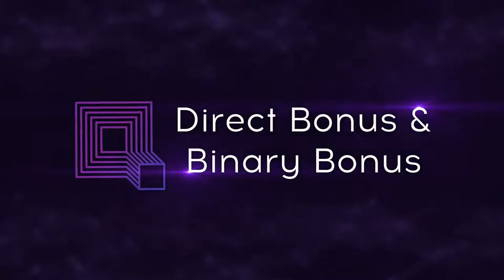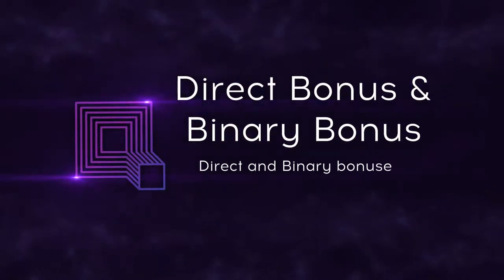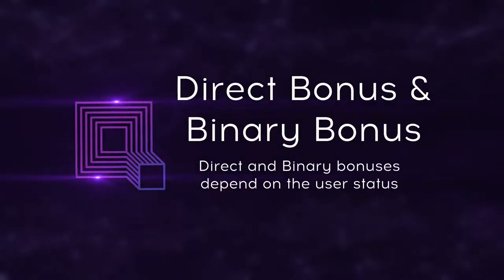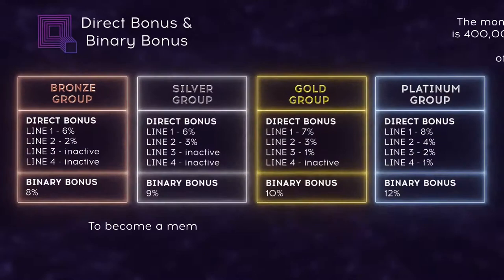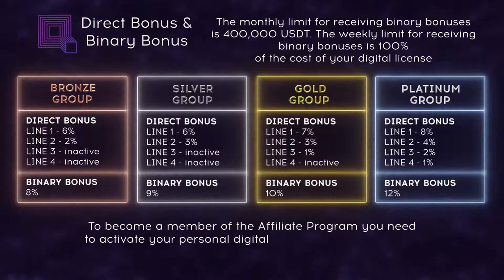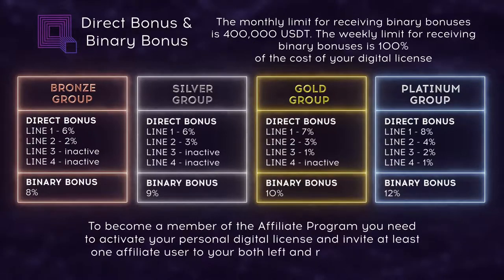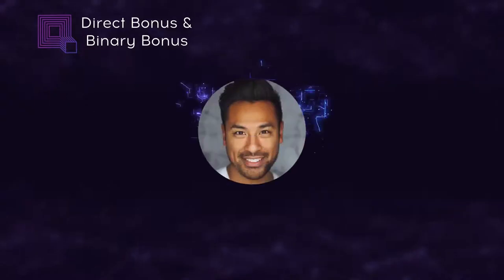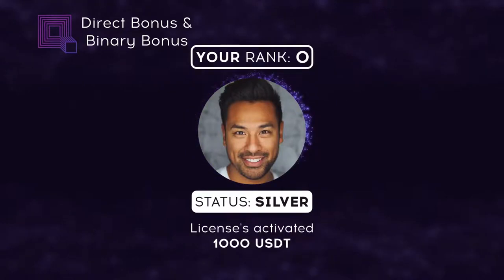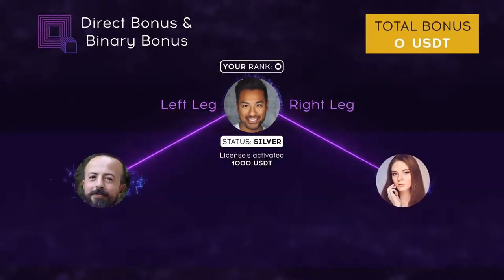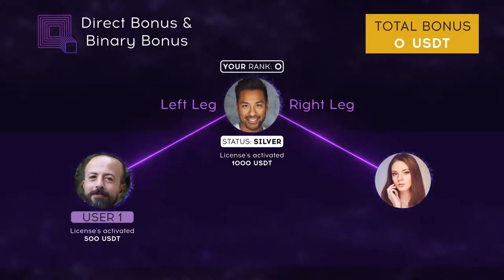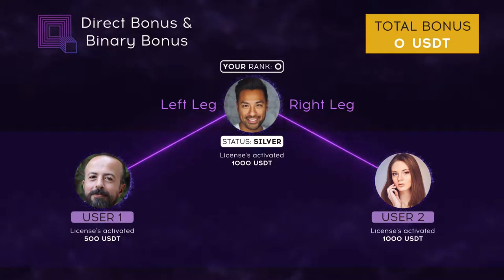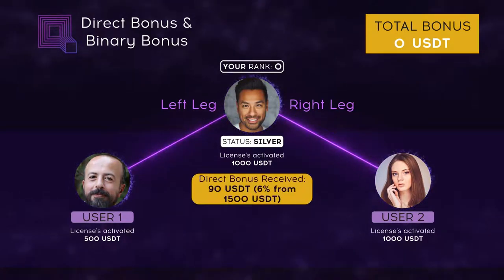Now let's take a look at Direct and Binary bonuses with examples on how to achieve these bonuses. Direct and Binary bonuses depend on the current user status — the higher the user status, the better the conditions of the bonuses. To start receiving Direct and Binary bonuses, users must register by using your affiliate link. The Direct bonus is paid for every new digital license activated by your partners.